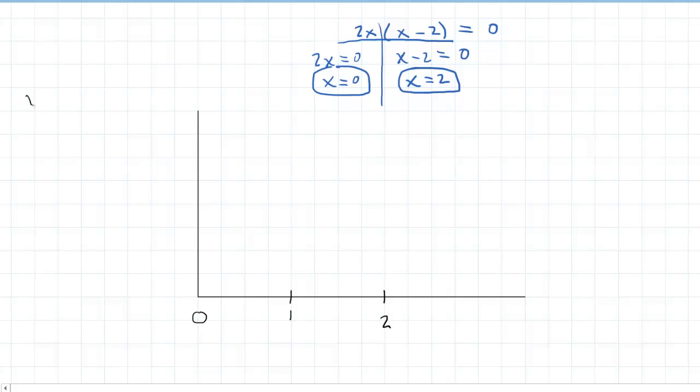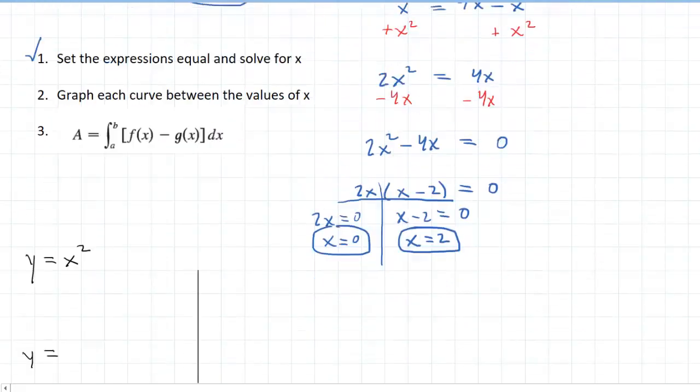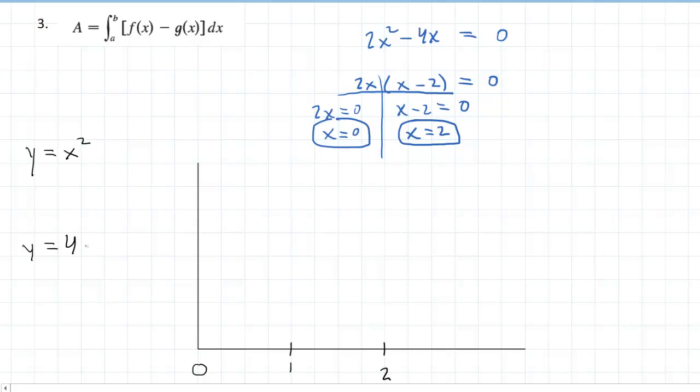Now our two functions, recall, were y equals x squared and y equals 4x minus x squared. Now what I like to do is I like to plug in some values to show me what the graph looks like. So why don't we color this curve in red so we can kind of monitor it. And I'm just going to be plugging 0 in for x here. So I would have y equals 0 squared, which of course would give me 0.